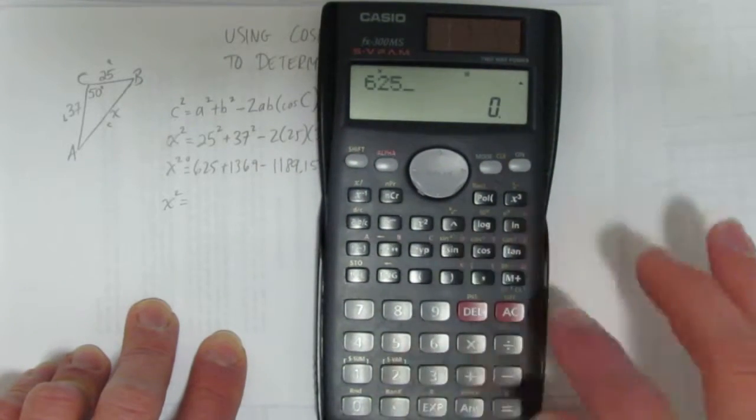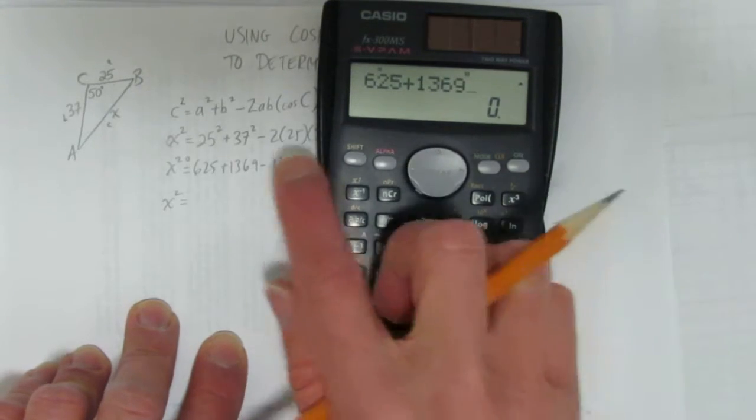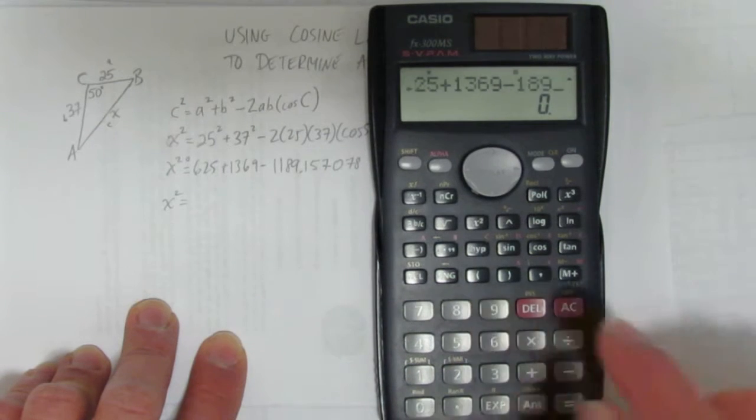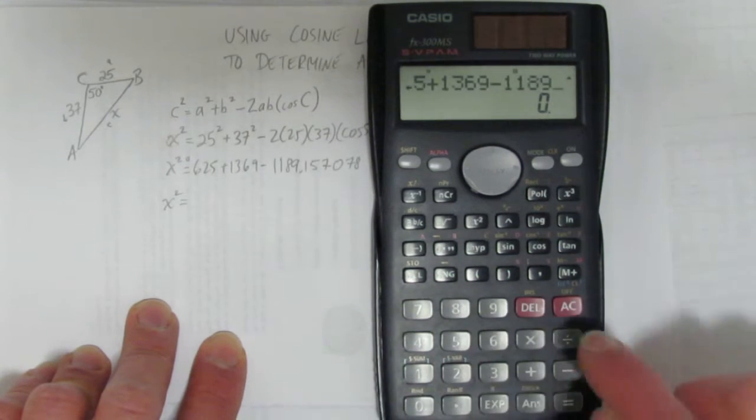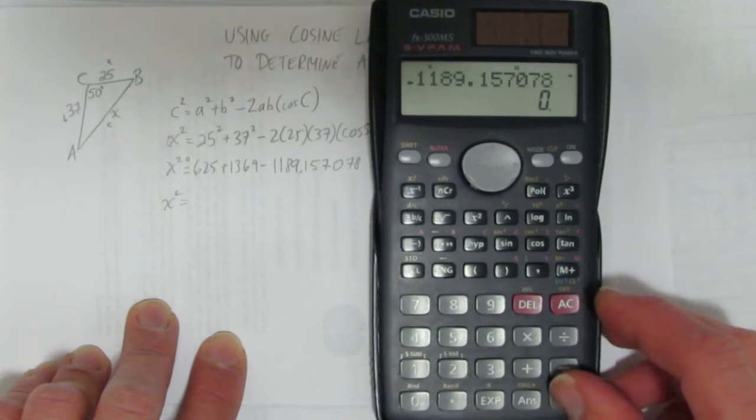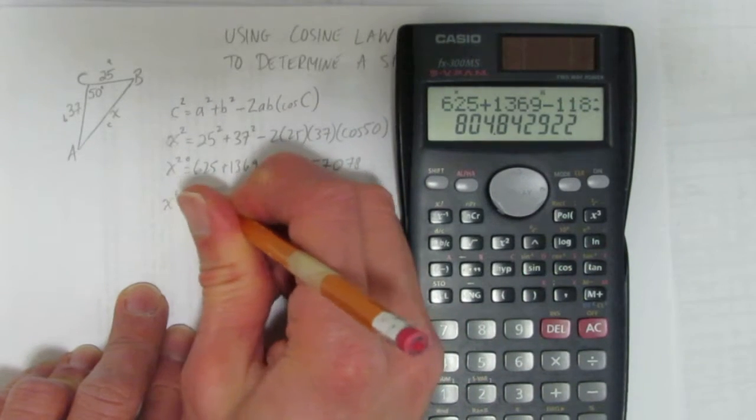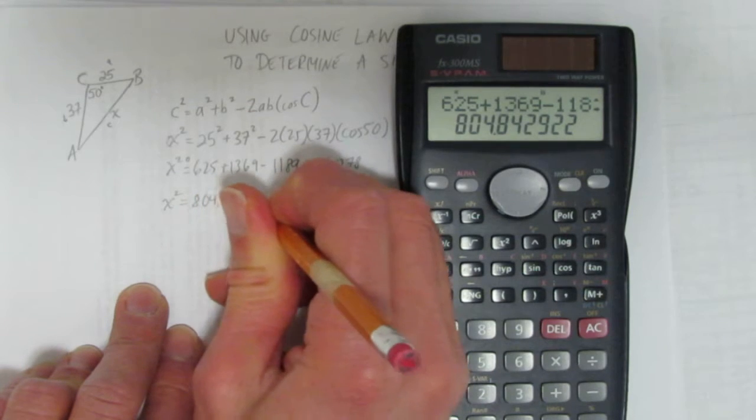I already rounded on this line, but from here to here, I won't round. I'm going to do exactly what it says. The calculator won't have to cut off any digits because it's already done that the line before. I'm just going to enter it: 1189.157078, and I get 804.842922.